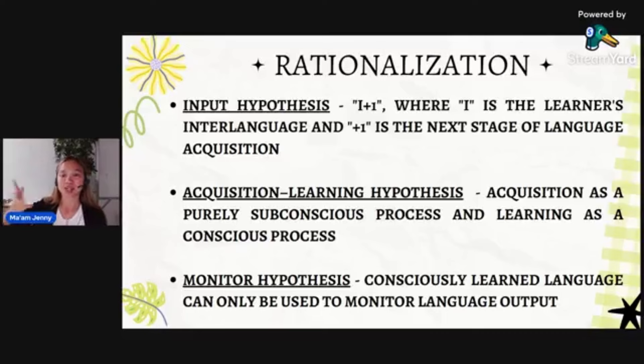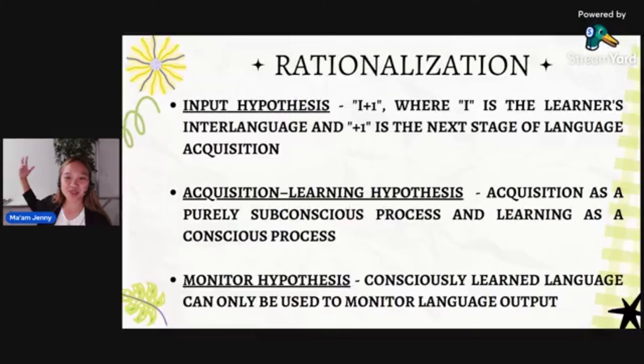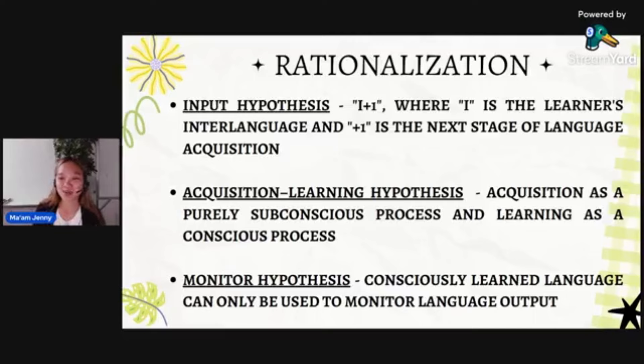When we're learning a language, you can't skip levels. For example, when you're just starting out, you can't immediately jump to the present perfect progressive tense. You start with simple tenses and simple sentences first — past, present, future. Once you know those, that's your 'I.' Then you proceed to the next level, which is the 'plus one.'